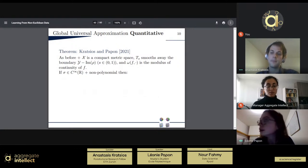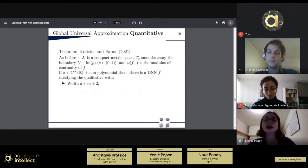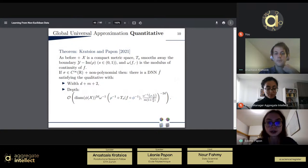So let us assume that the activation function sigma is c infinity, so infinitely differentiable and non-polynomial. Then we have our deep neural network hat f, which approximates f. And it has a width d plus m plus 2. And its depth is of the following order.